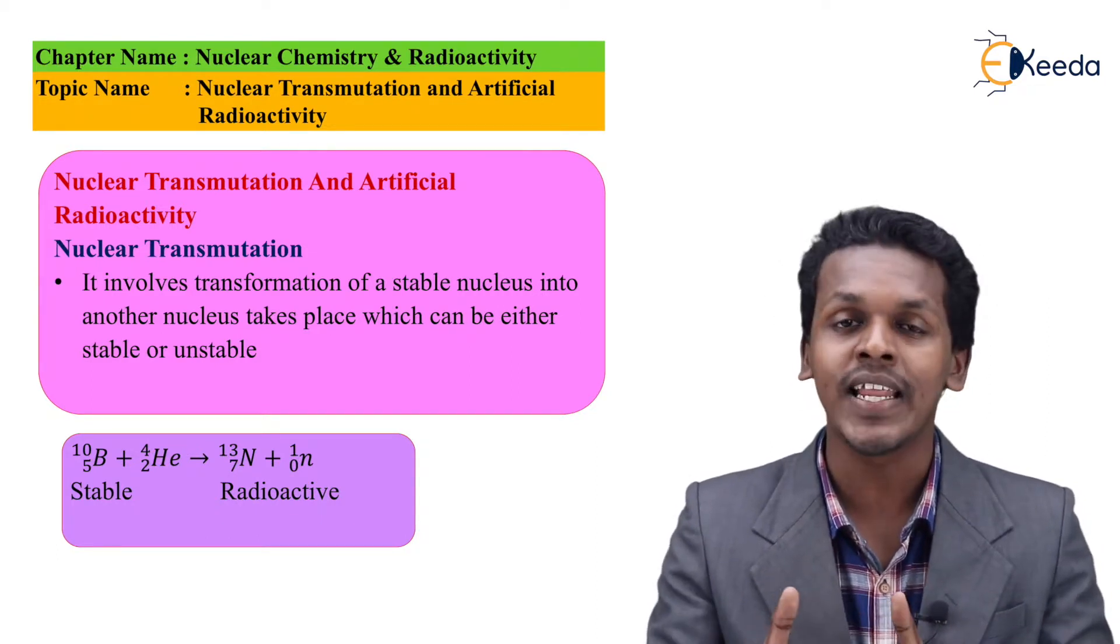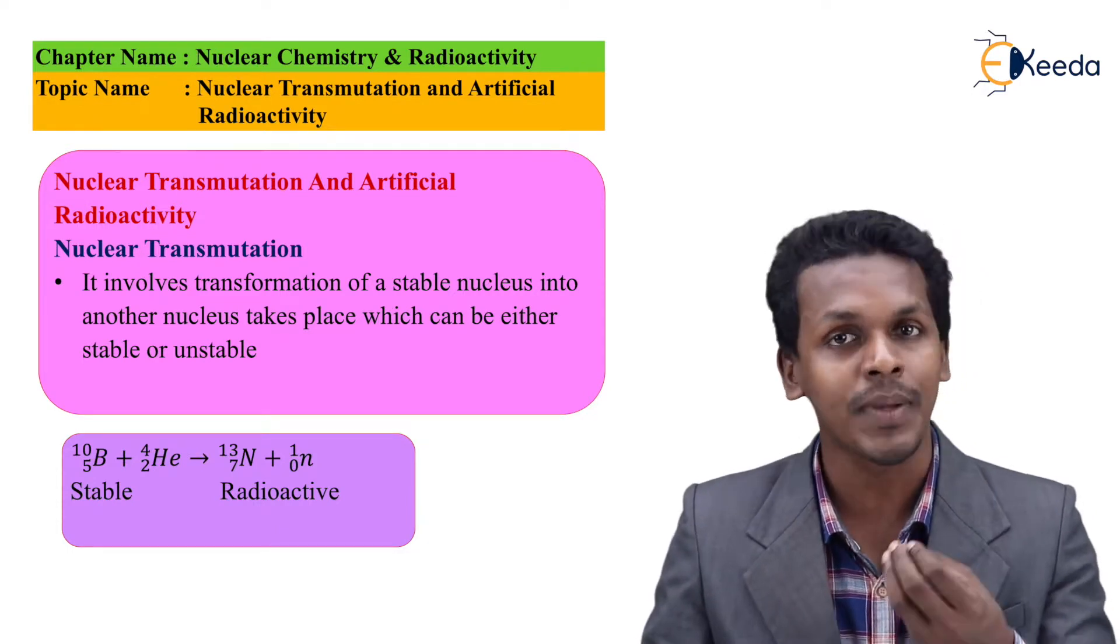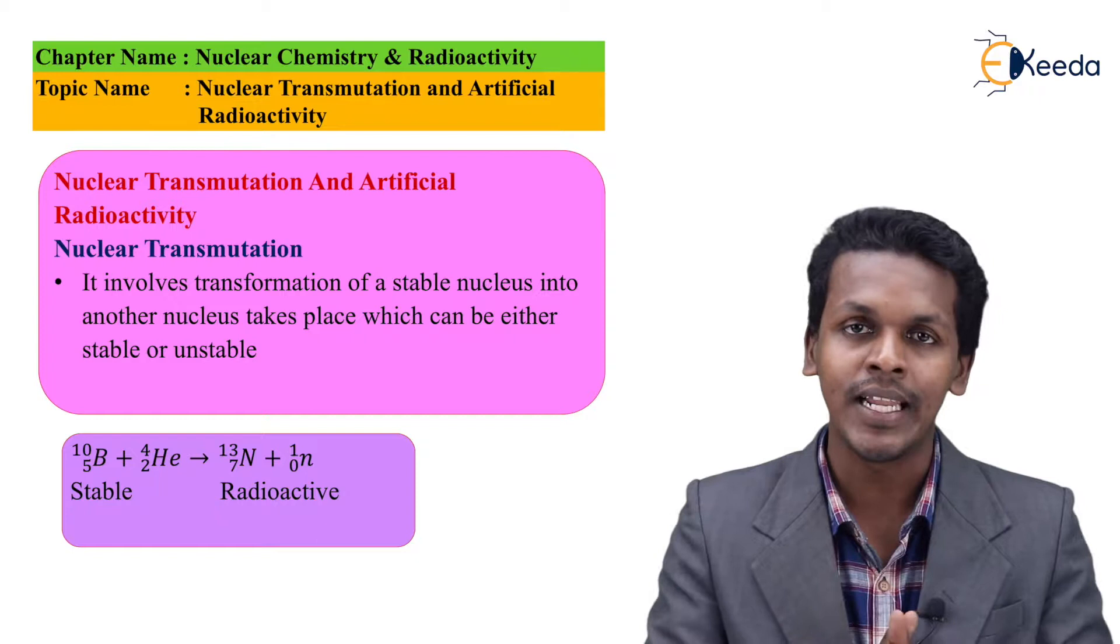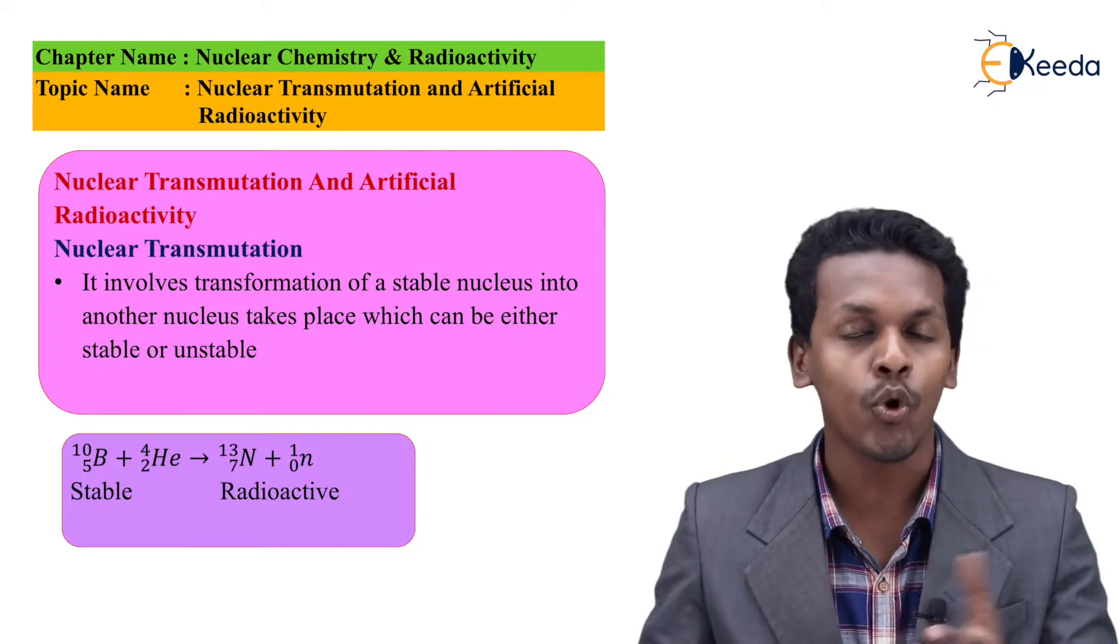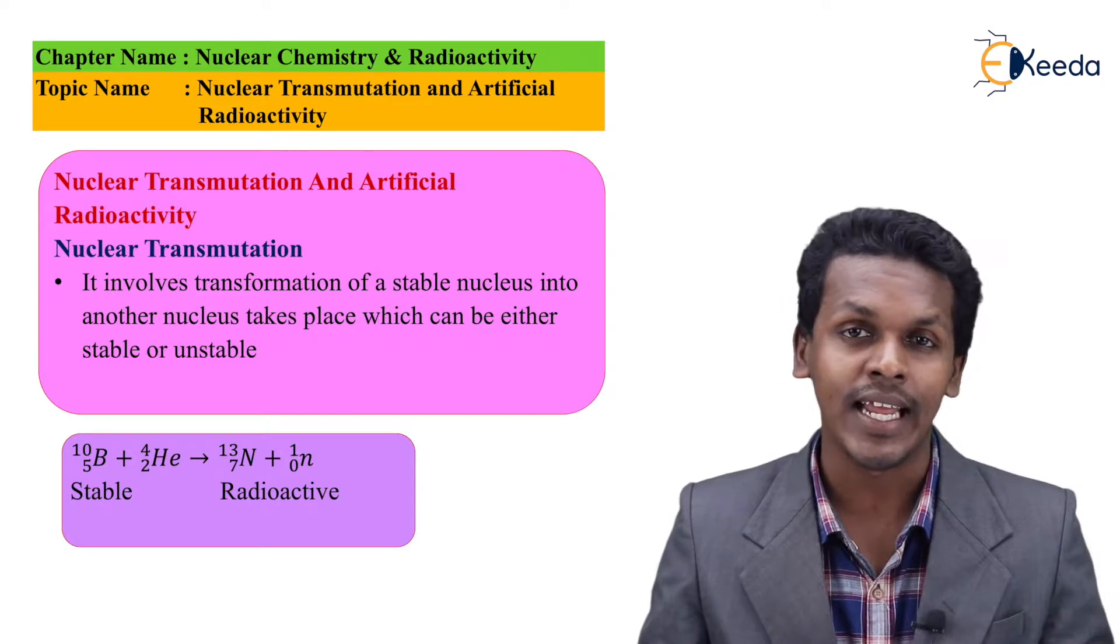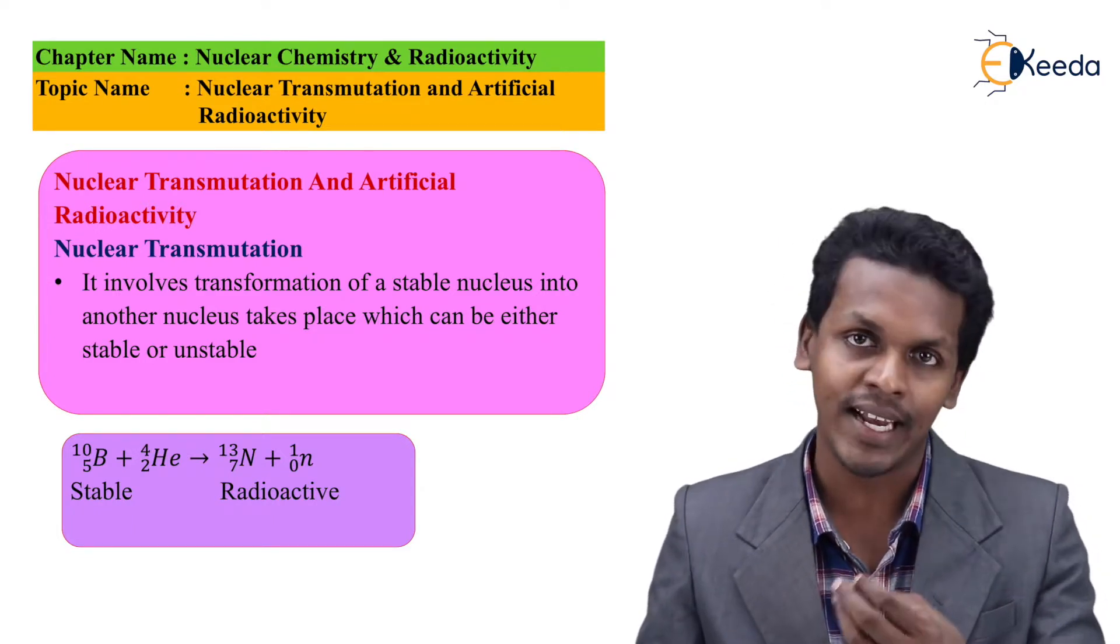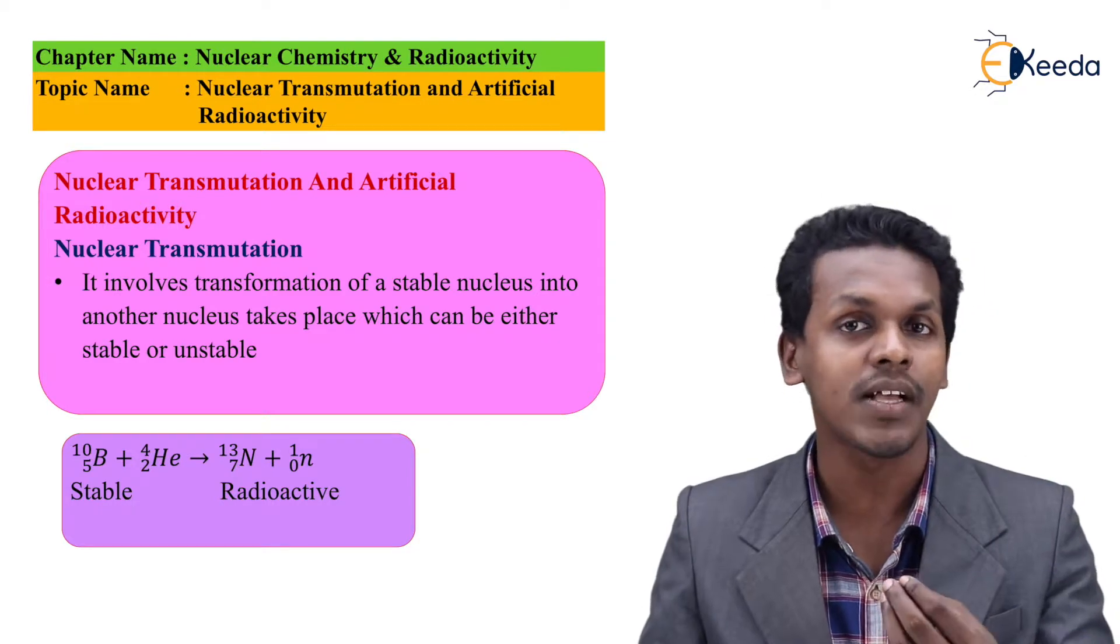This can be done by bombarding with particles such as alpha, beta, or gamma. For example, boron has an atomic number of 5 and atomic mass number of 10. When boron is bombarded with helium having atomic number 2 and atomic mass number 4,